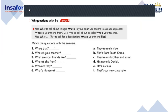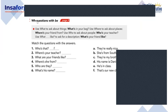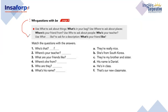Here we have a practice exercise. We have some instructions, then some questions and answers that we need to match. Ernesto, please read the instructions. 'Use what to ask about things — what's in your bag? Use where to ask about places — where is your friend from? Use who to ask about people — who's your teacher? Use what like to ask for a description — what's your friend like?'